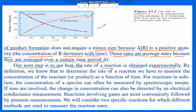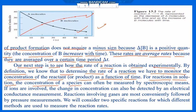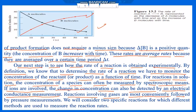To determine the rate of reaction, we must monitor the concentration of the reactant or product as a function of time. For reactions in solution, the concentration of species can often be measured by spectroscopic means. If ions are involved, the change in concentration can be detected by an electrical conductance measurement. Reactions involving gases are most conveniently followed by pressure measurements. We will consider two specific reactions for which different methods are used to measure reaction rates.